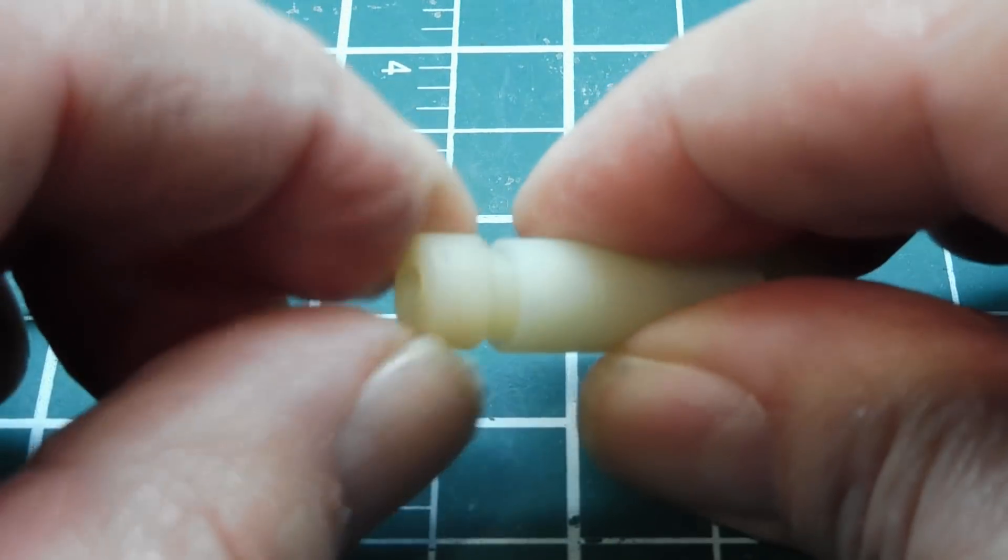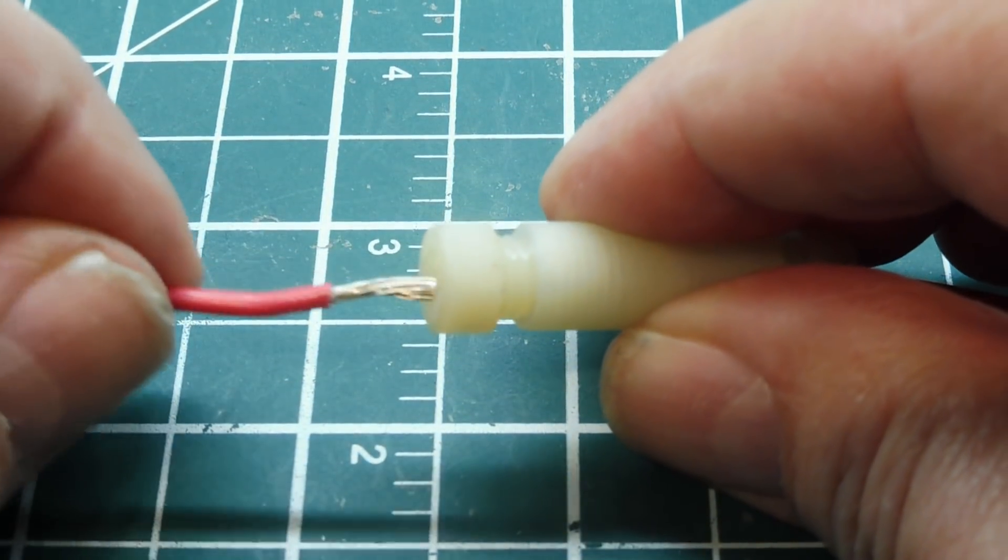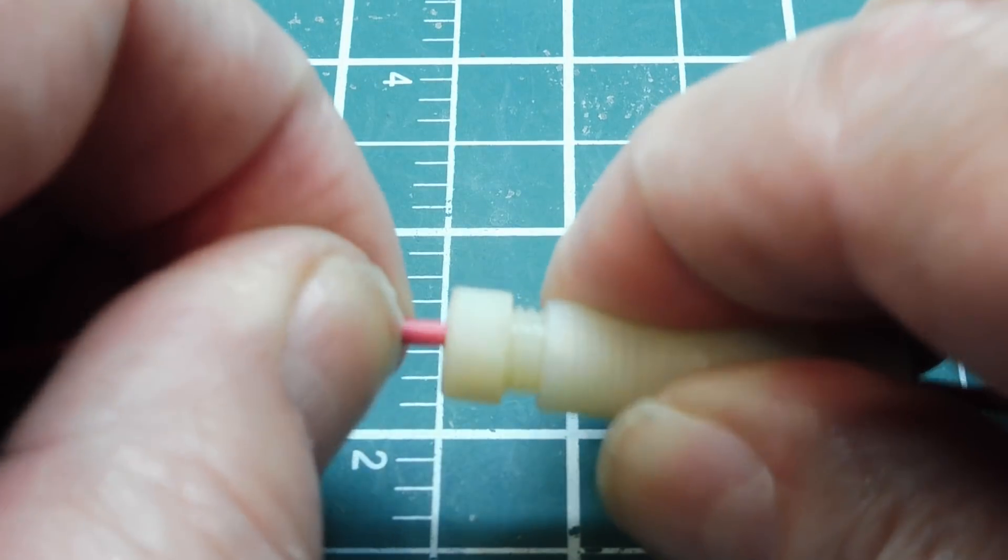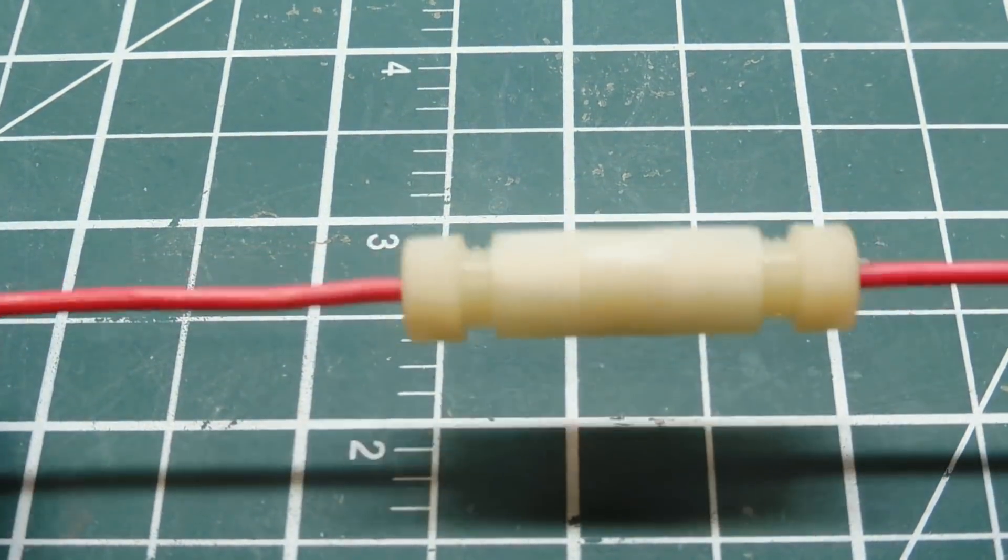Do the same on the other side. Loosen it up, put the wire in, tighten, and there's our connection. It's very tight.